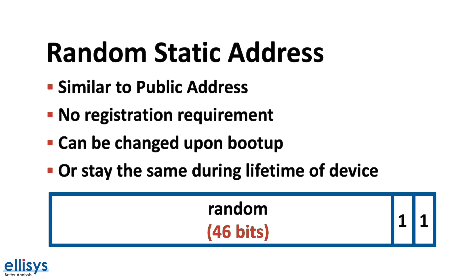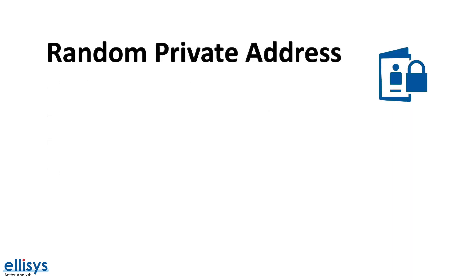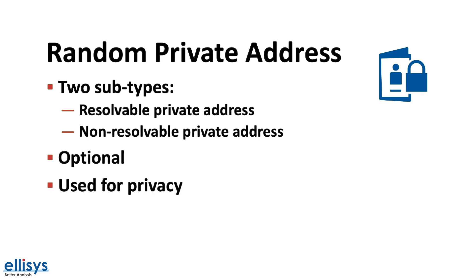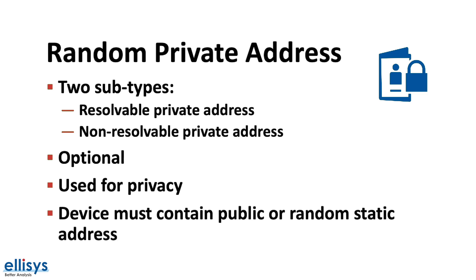The other subtype of random addresses is private addresses. A private address has two subtypes: either resolvable or non-resolvable private address. A private address is optional and is used specifically for privacy protection of a Bluetooth device. A device must be assigned a public or random static address even if it also holds a resolvable or non-resolvable private address.